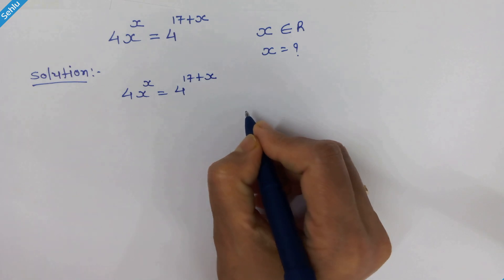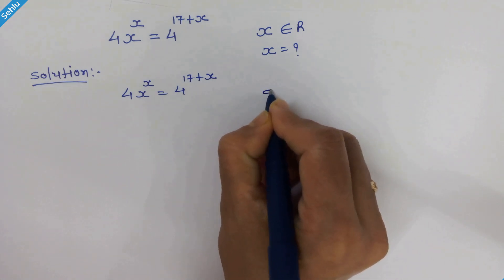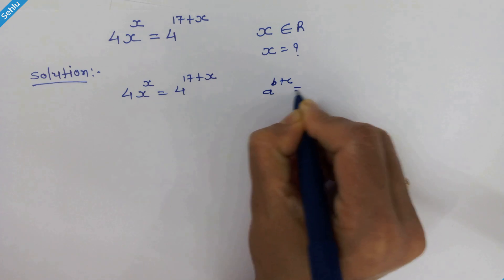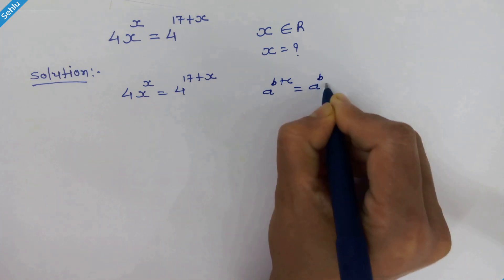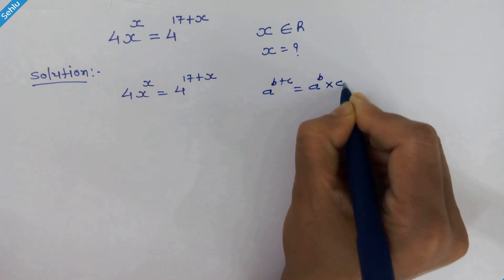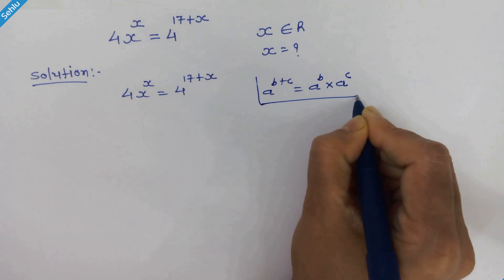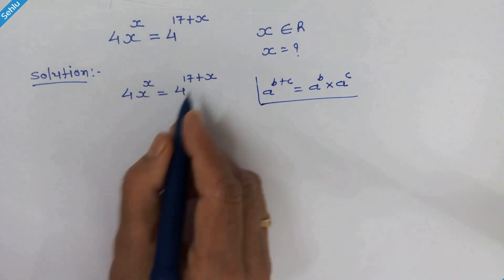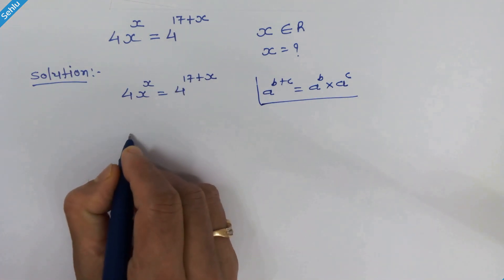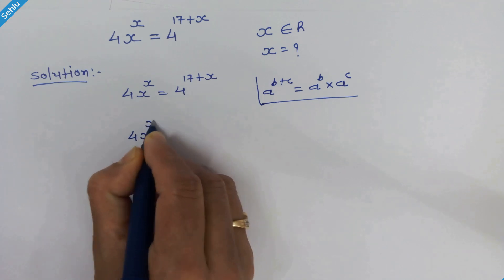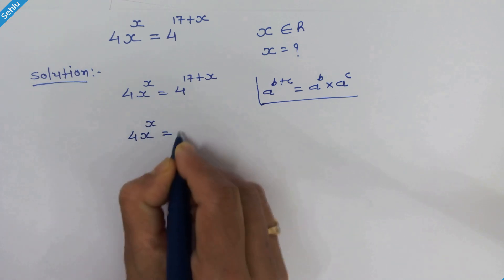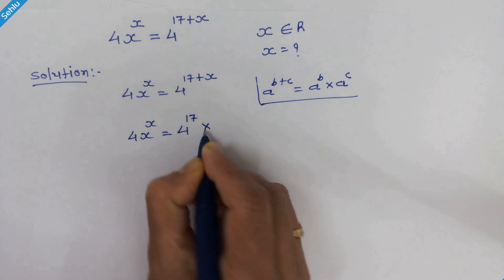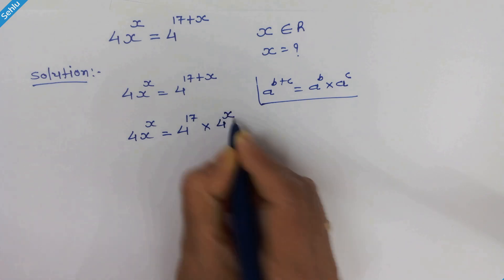First we are going to apply this rule: if we have a raised to b plus c, then it will be a raised to b times a raised to c. So according to this rule, this part can be written as 4 raised to 17 times 4 raised to x.